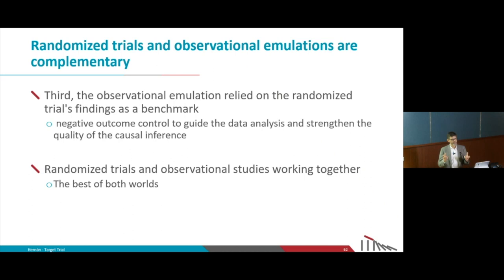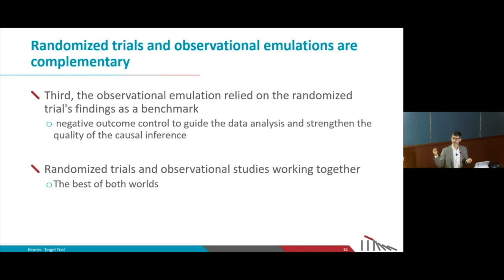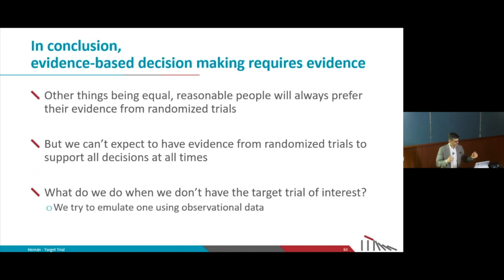The conversation about randomized trials versus observational studies gets a little boring because it's really not a race. Of course, in a perfect world we would have randomized trials for all questions — that is my preference too. But it's not happening and we still have many questions that need to be answered. The best that we can do is apply sound principles of study design and analysis, emulating a target trial when using observational data. We need evidence for evidence-based decision making — let's use both evidence from randomized trials and from observational studies, combined in the best possible way.